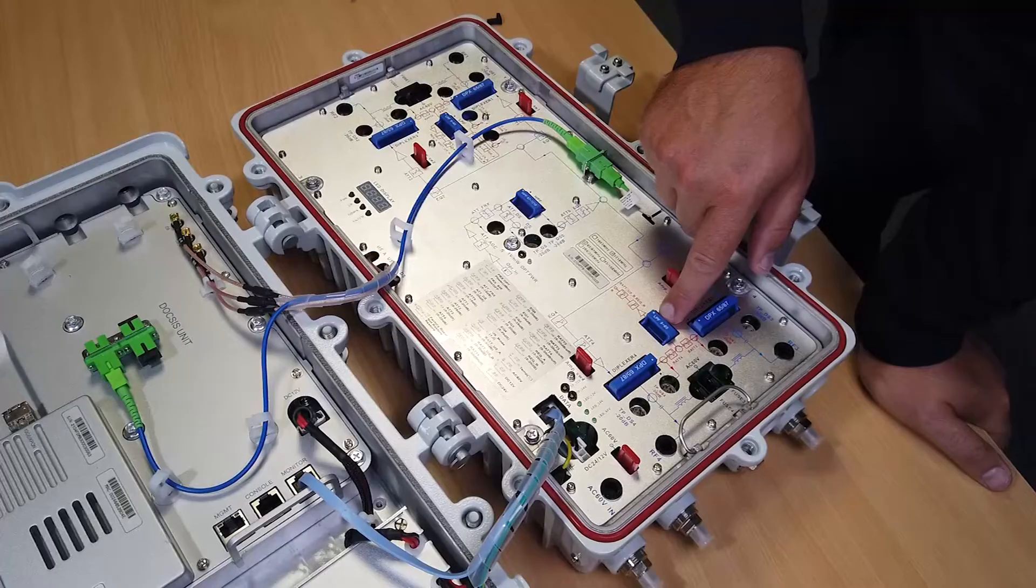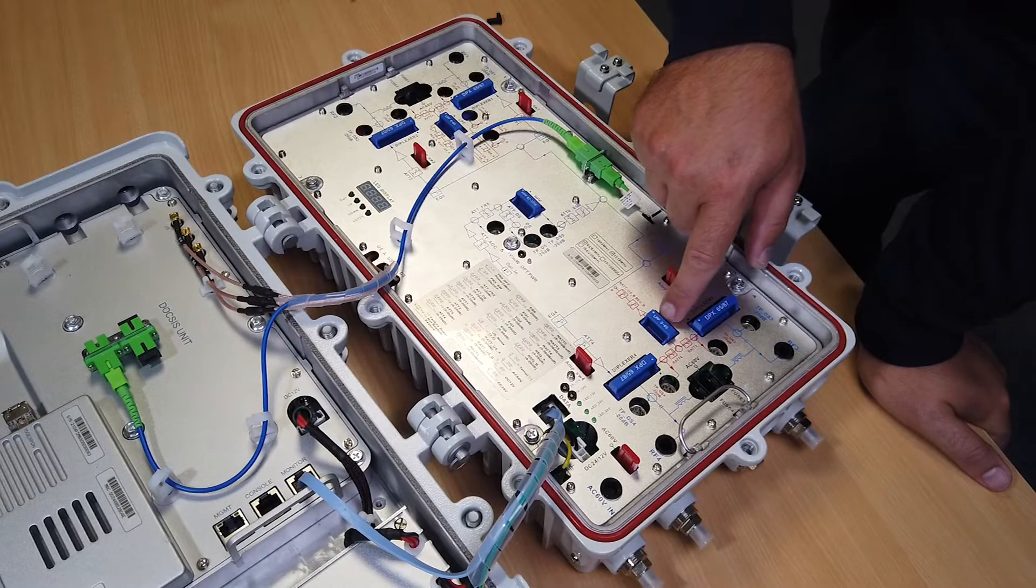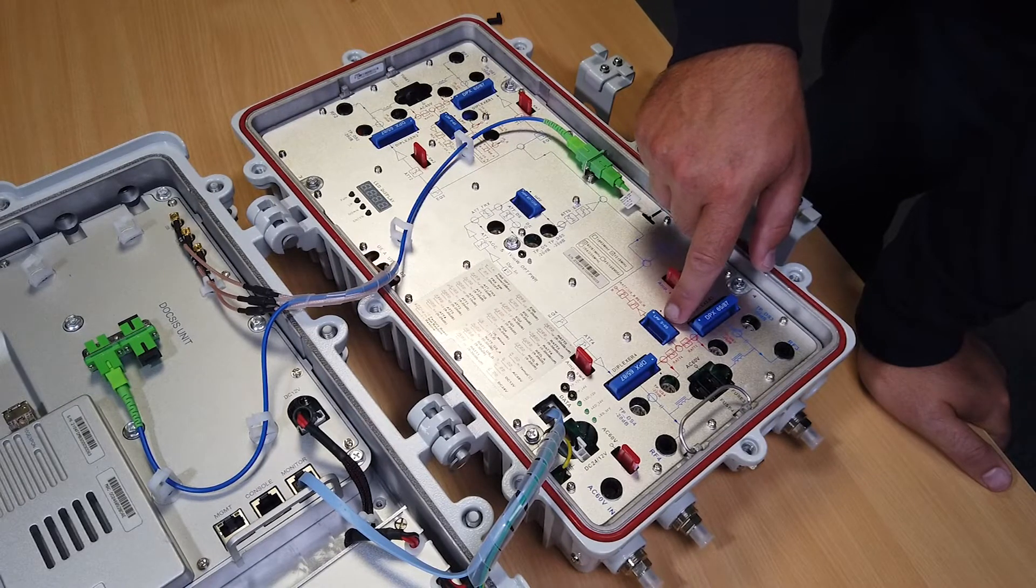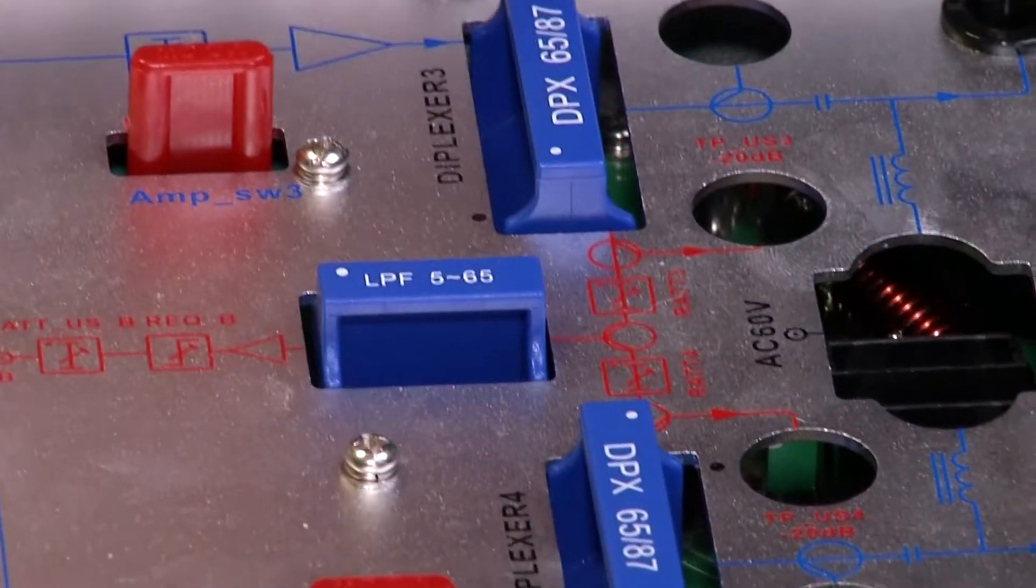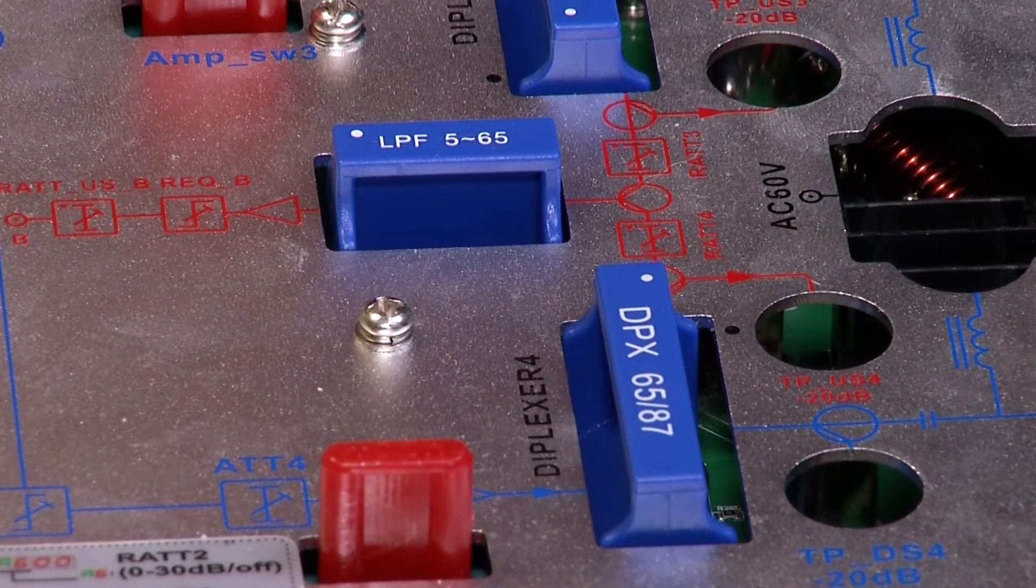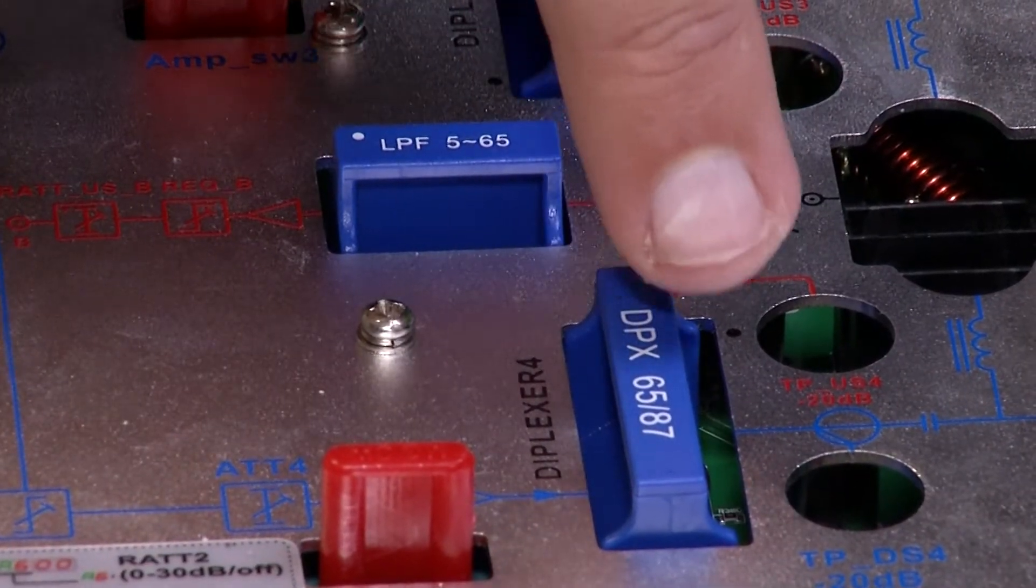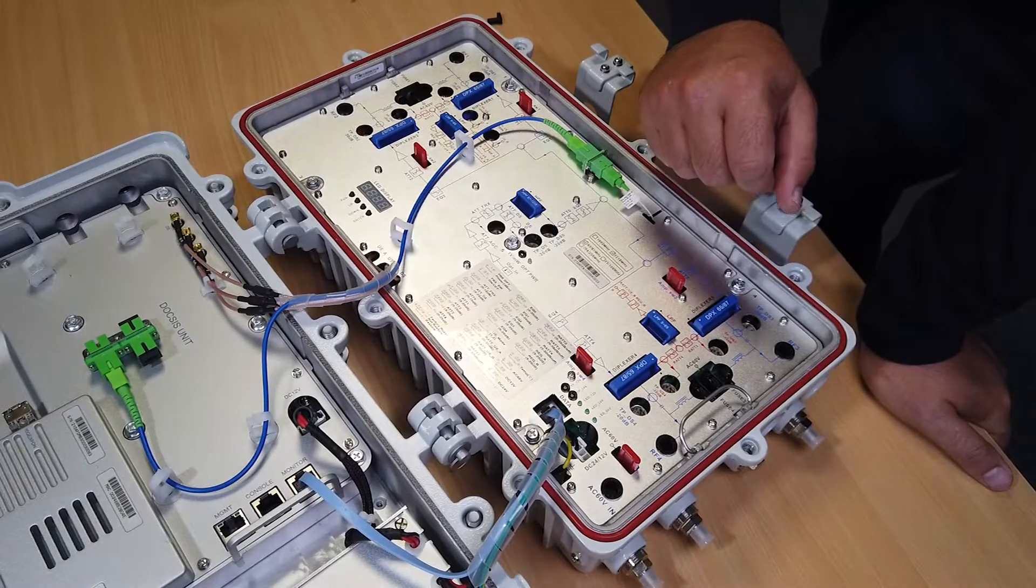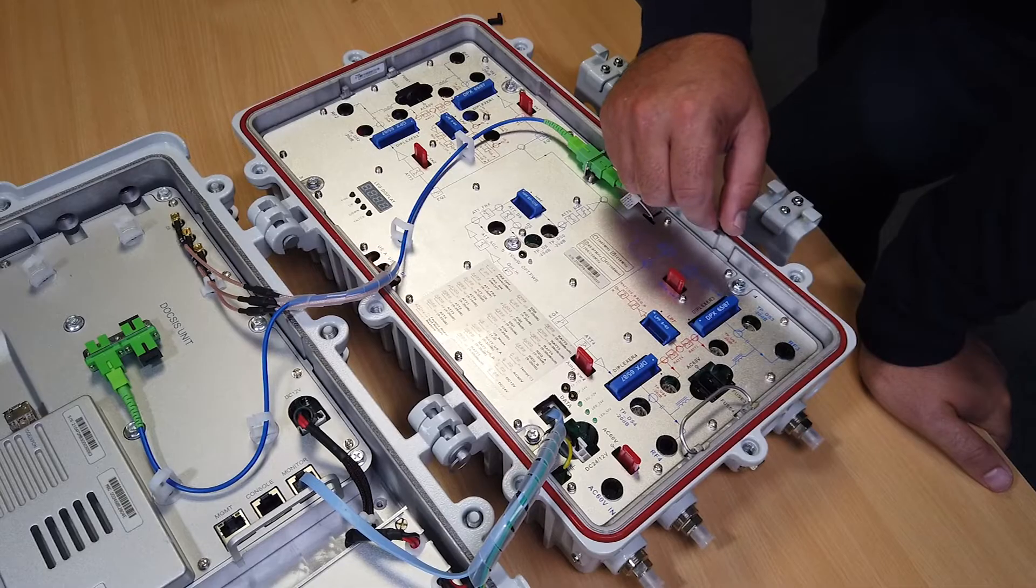This is the low-pass filter covering 5 to 65 MHz, which can be swapped any time to a different module like 5 to 200 MHz, and then used with full DOCSIS 3.1. Here are the diplex filters. The corresponding test sockets are also fitted, of course. Thus, you can measure each output separately and any time.